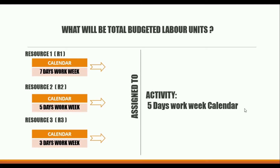What will be the total budgeted labor units if we have three resources with seven, five, and three working days calendars, and we assign them to an activity with a five working days calendar?